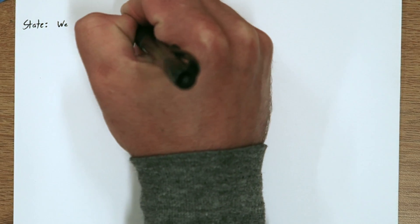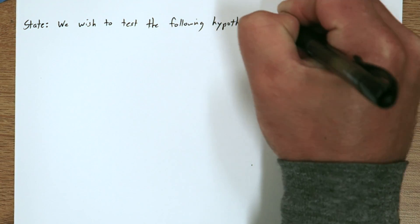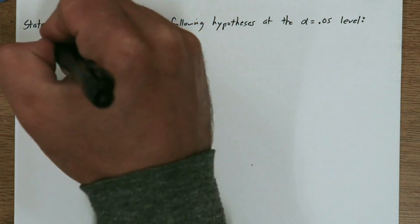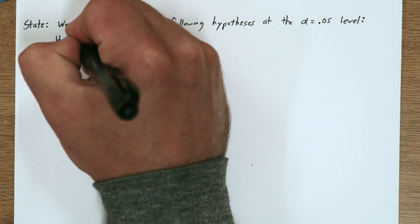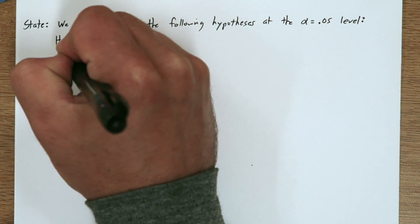This is a perfect problem to use the state-plan-do-conclude approach. So for the state step, we're going to say we wish to test the following hypotheses at the alpha equals 0.05 level.